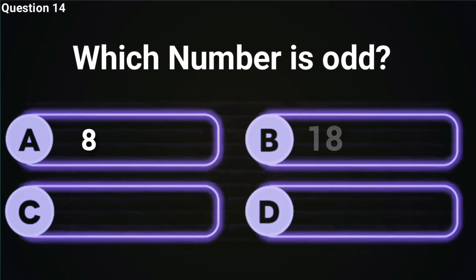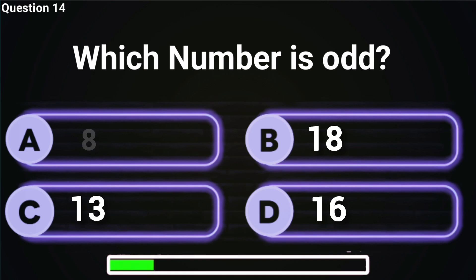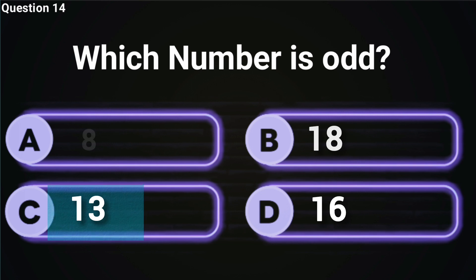Which number is odd? Odd one out, just like that one cousin in family gatherings. Answer C, 13 is correct.